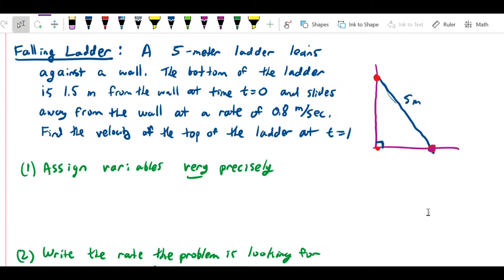The task is to find the velocity of the top of the ladder at time t equals 1. In other words, the top of the ladder is sliding downwards as the bottom of the ladder slides outwards.